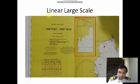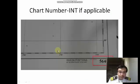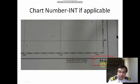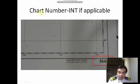Here we have the linear large scale in this part of the chart. We also have the chart number and international number if applicable. This chart doesn't have an international number, which is why it shows 5640 alone. This is also located on another part of the chart — on the upper left-hand corner box and on the lower right-hand corner.